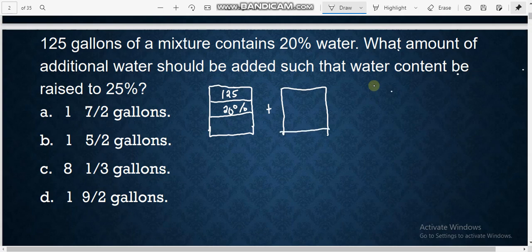So the second mixture is what amount of additional water, so we do not know the amount, that is the unknown. And our second mixture is 100% water. So that is the reason why it's 100% because the mixture itself is 100% water.